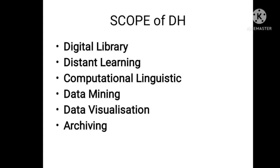Archiving is another area — how data is created related to any writer, any school or college, and how it is accumulated. Data visualization is also related to graphic novels: when you take a book or story and change it into visual form, it comes into the periphery of both English literature and digital humanities. All this is the scope of DH.